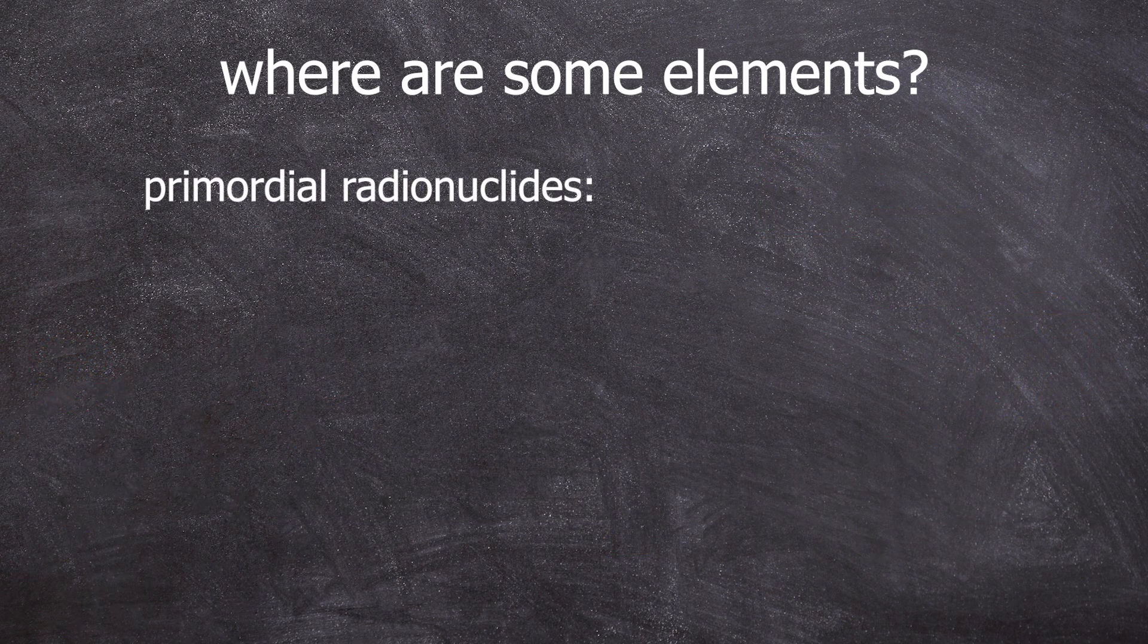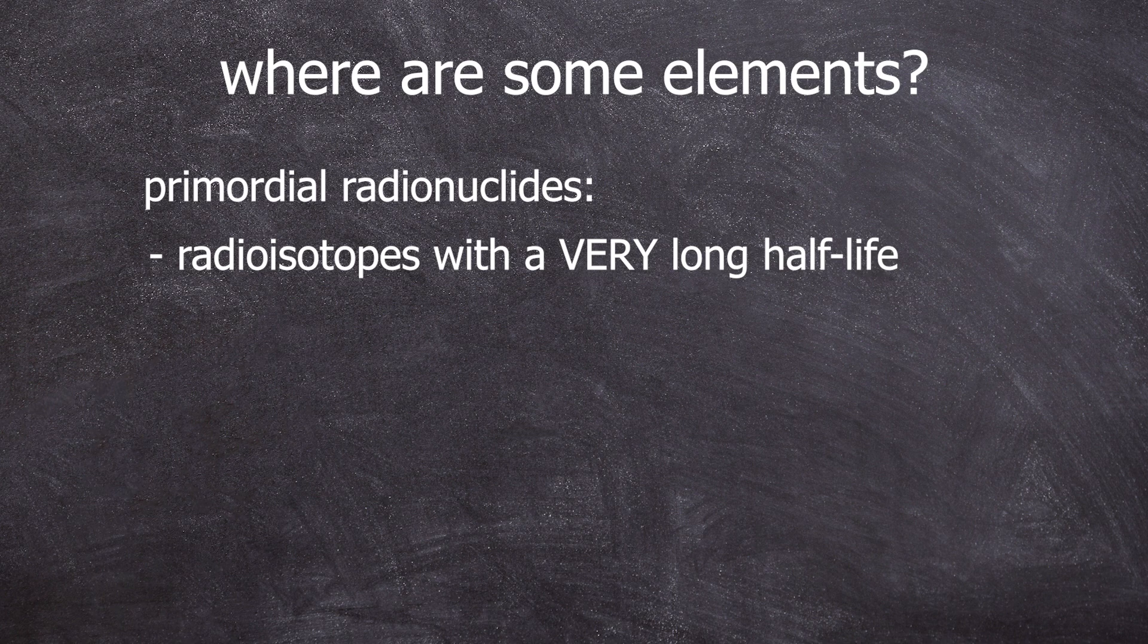However, there are some exceptions. Radioactive isotopes whose half-lives are so long that they still exist on Earth. These nuclei are called primordial radionuclides. They are radioactive but with such long half-lives that they still exist today.